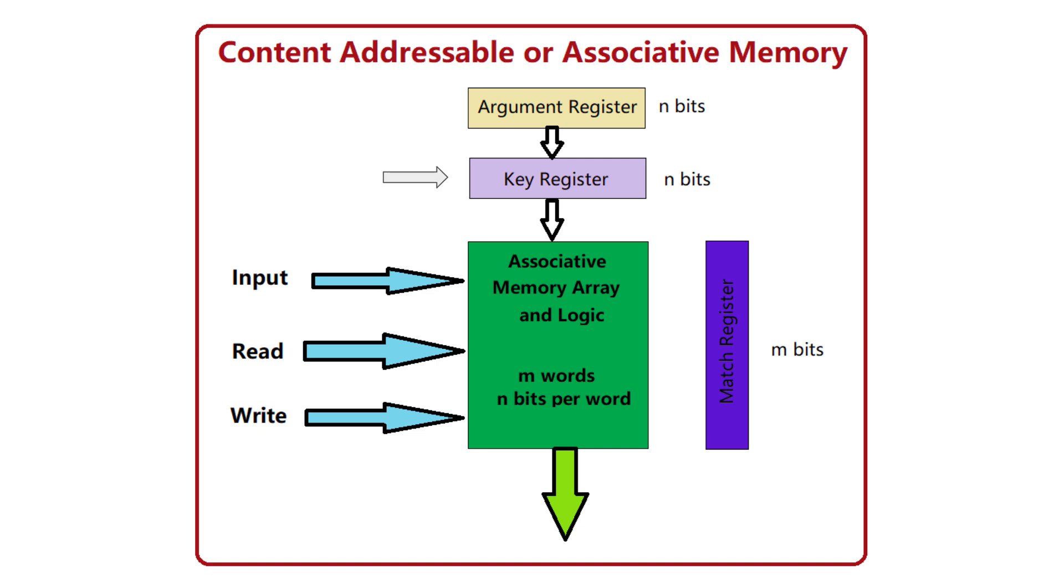Second is the key register. This n-bit register holds a mask. This mask allows us to selectively search only certain parts of each word in memory, so we can search the entire word or only certain bits.